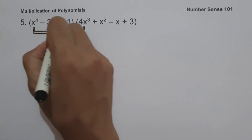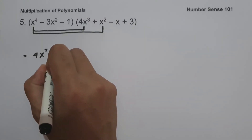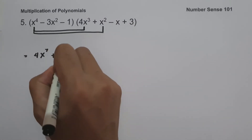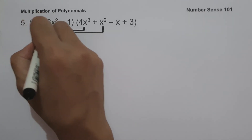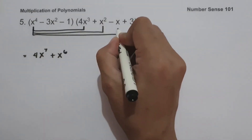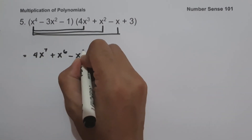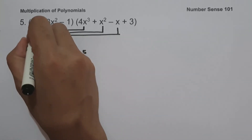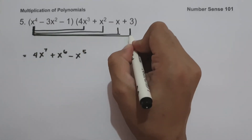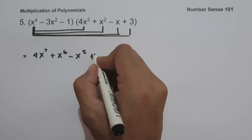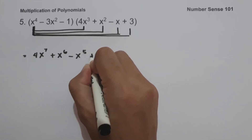x raised to 4 multiplied by x squared is x raised to 6. x raised to 4 multiplied by negative x is negative x raised to 5. x raised to 4 multiplied by 3 is 3x raised to 4.